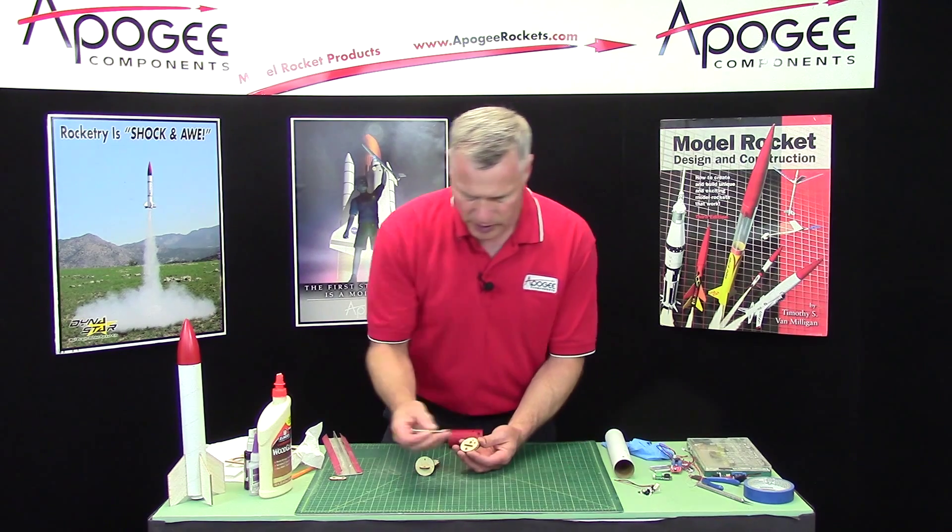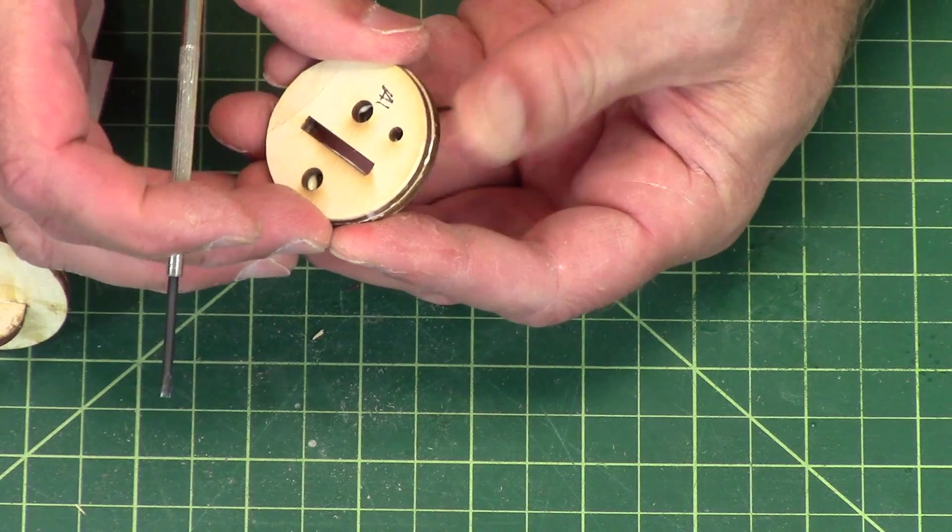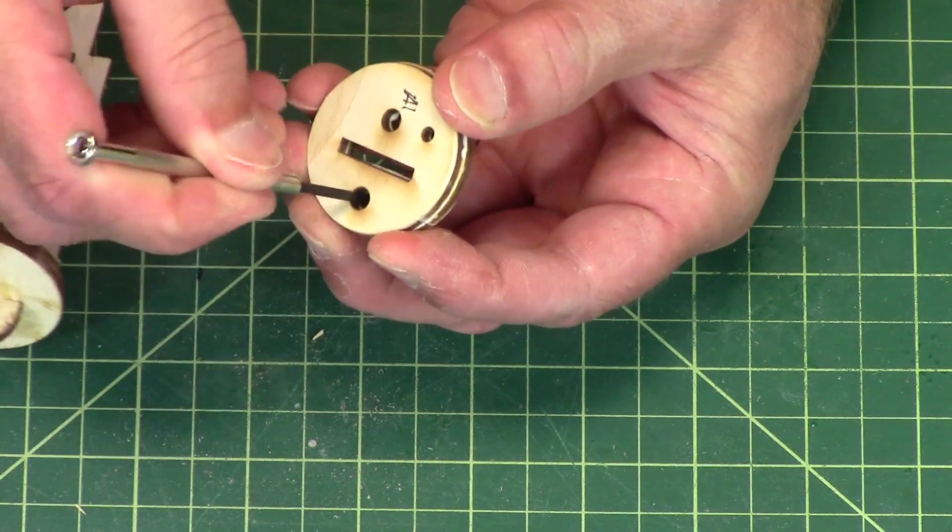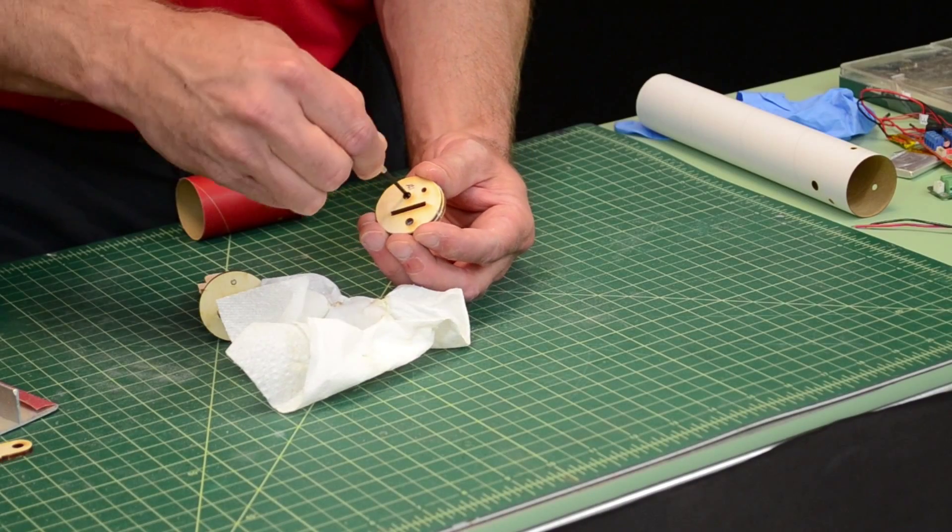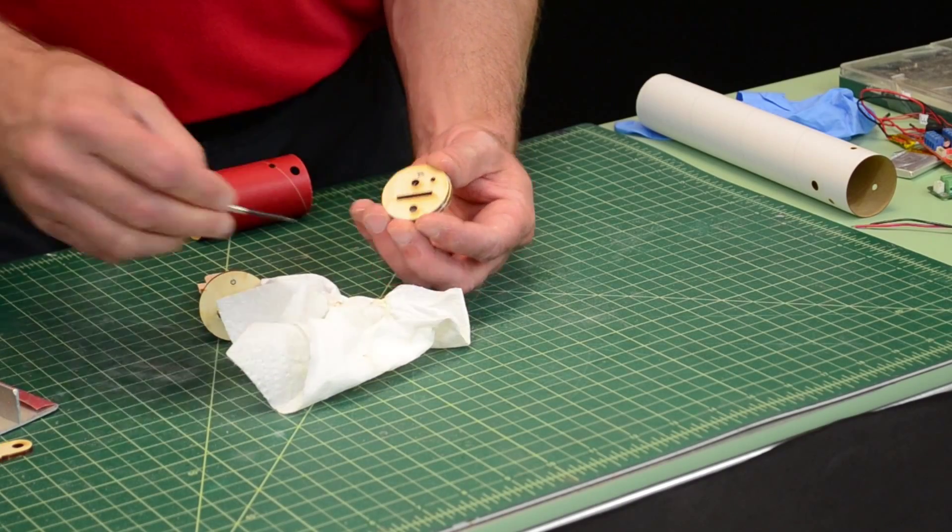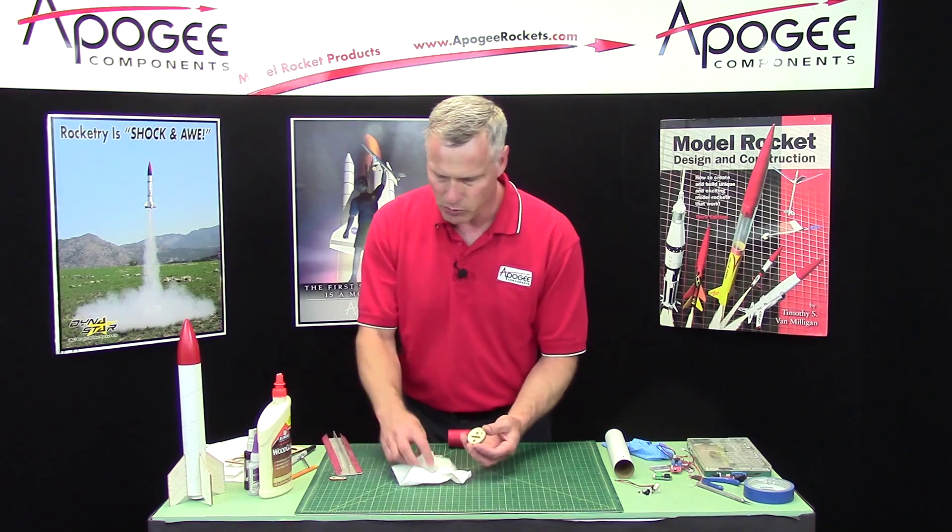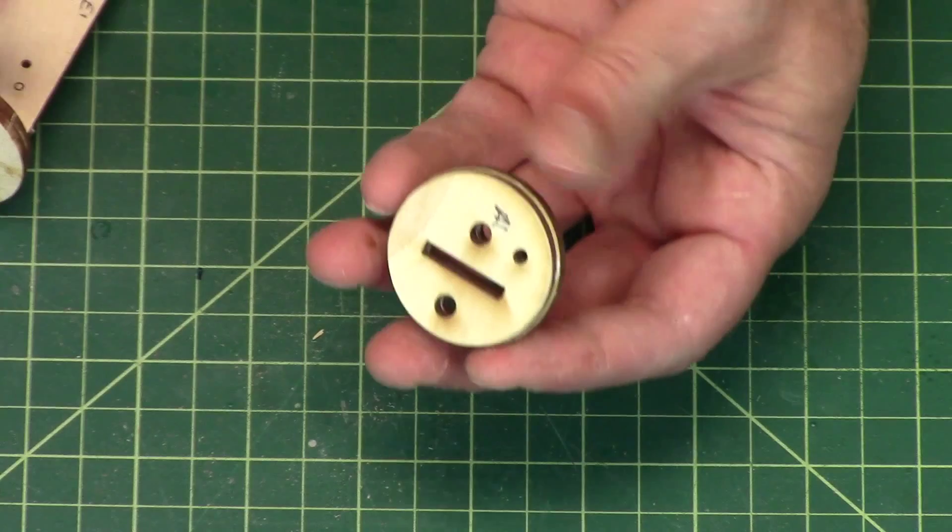Now I'm going to take a screwdriver or something else small and again clear out the internal holes as much as you can, because we do not want to glue these discs to the board. This disc has to be removable.